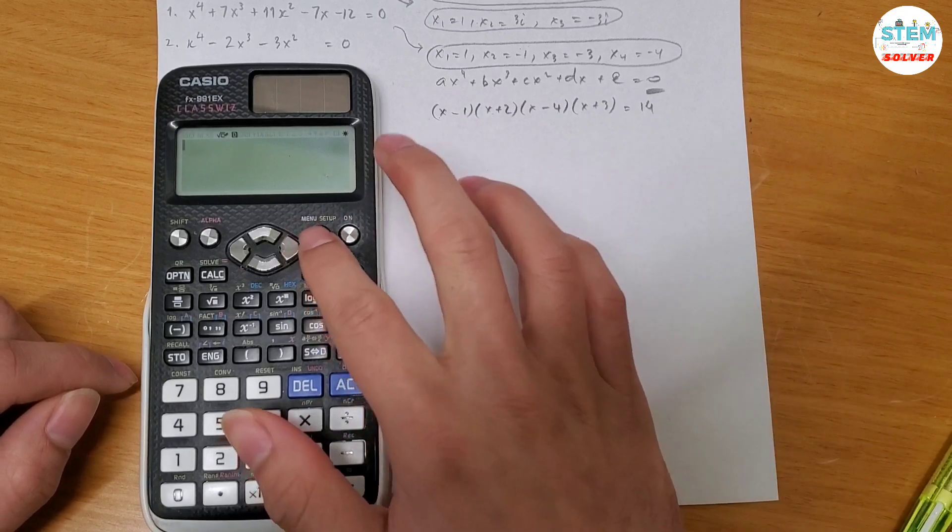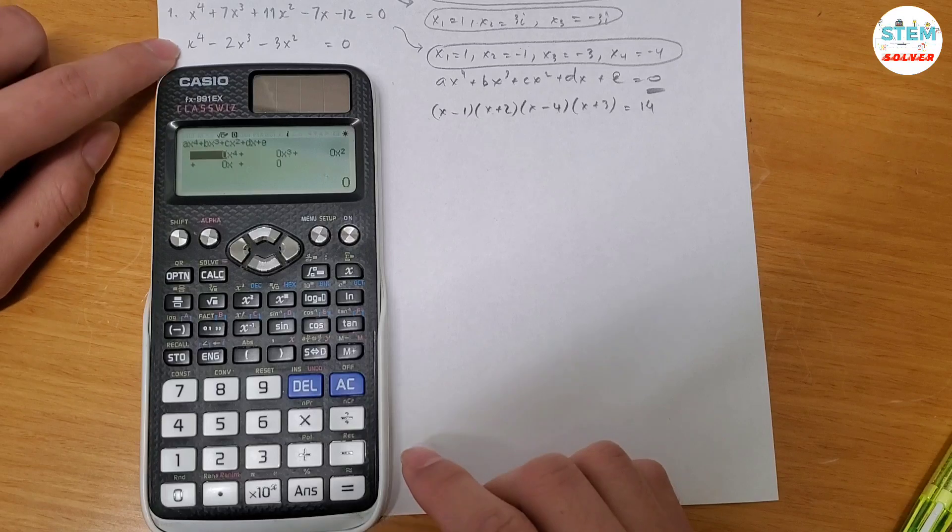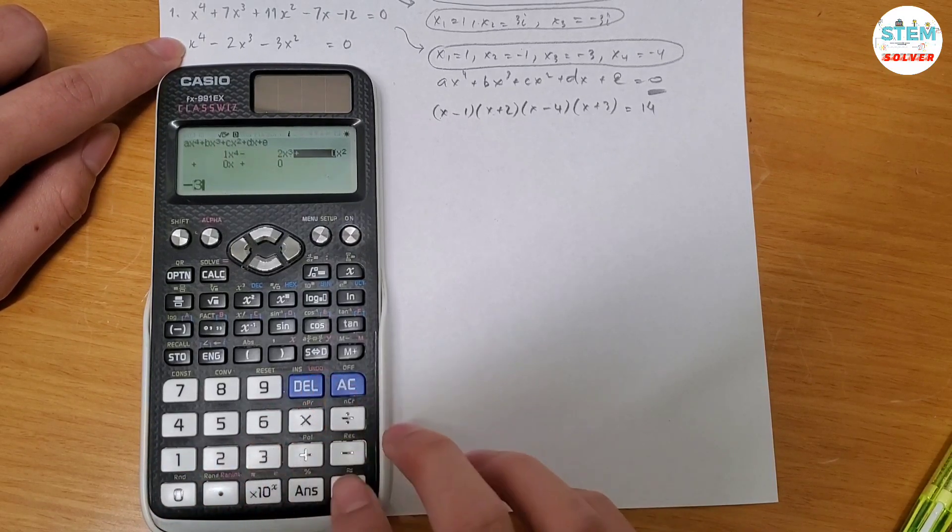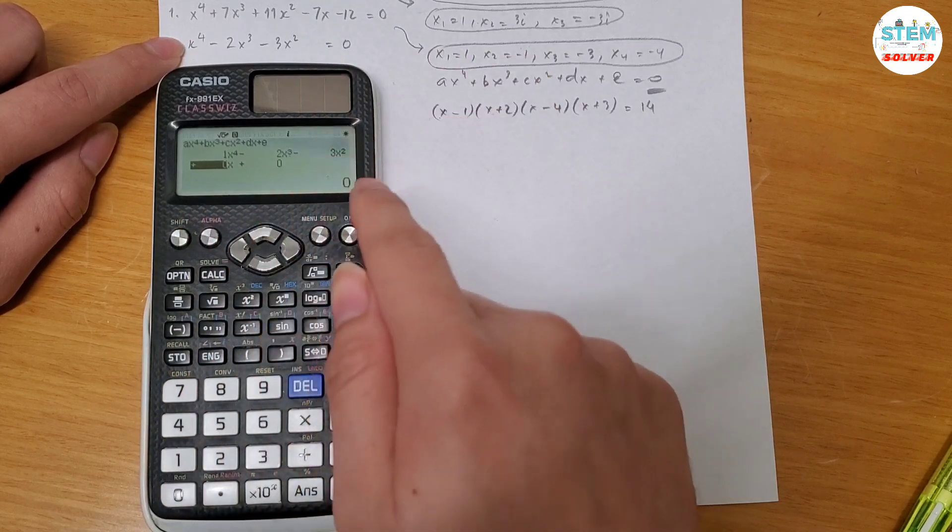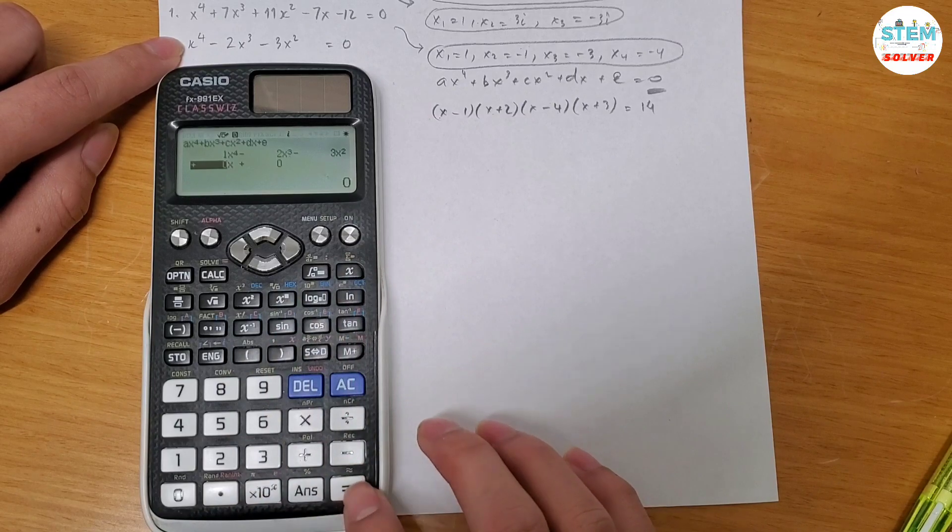So let me exit out and go back. So you hit setup, alpha, a, 2, and then 4. So x to the fourth, I have 1, minus 2, minus 3. Now for x, what is it? You don't see it. That means that it's 0. And then constant is 0 too. So that's it. Hit the equal sign.